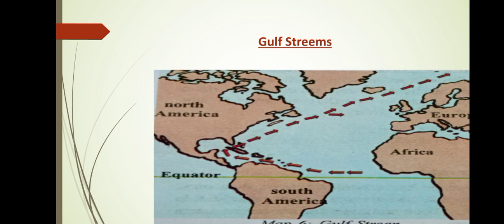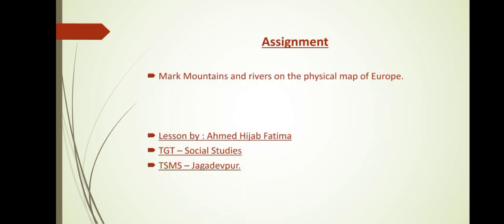Okay children, for now we will stop here with the lesson. Let us recapitulate. We have discussed today about the boundaries of Europe, the physical features of Europe — that includes mountains, plains, rivers, basins, gulfs — and we have also discussed about warm ocean currents and gulf streams. For today's assignment, mark mountains and rivers on the outline map of Europe. Okay children, we will meet in the next topic again.